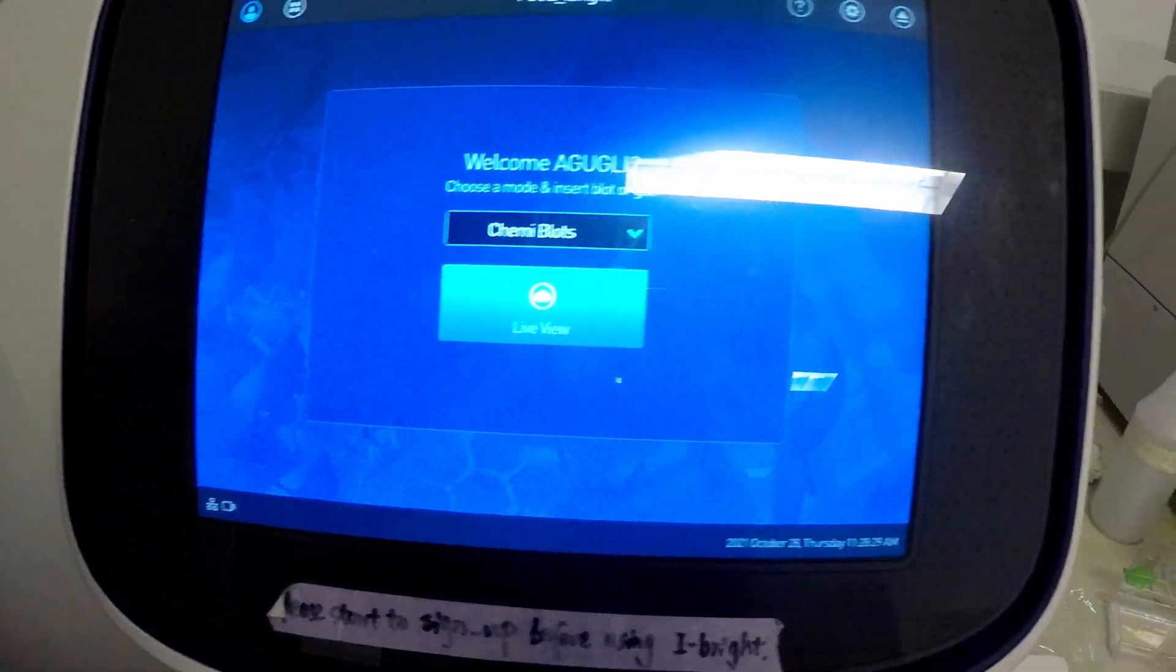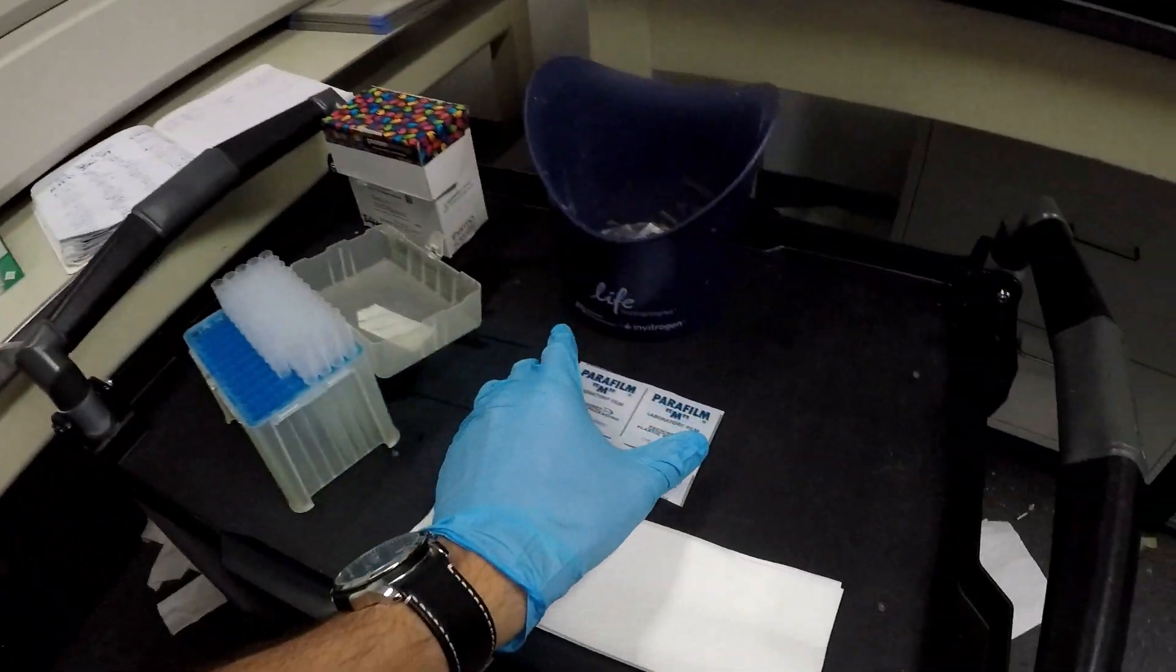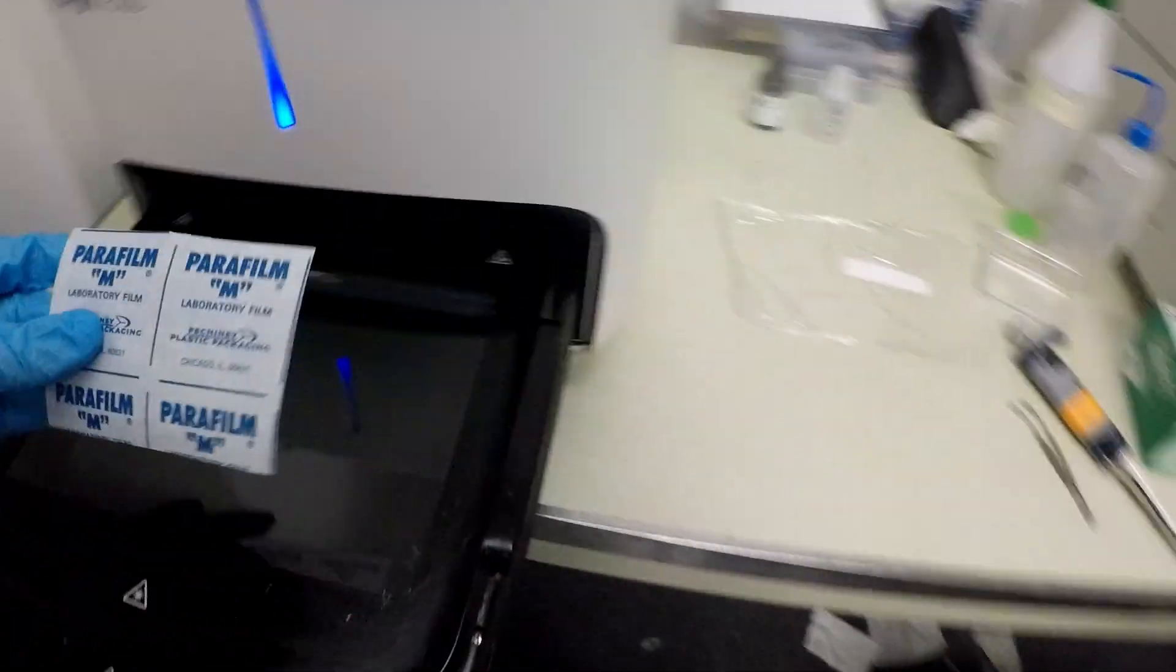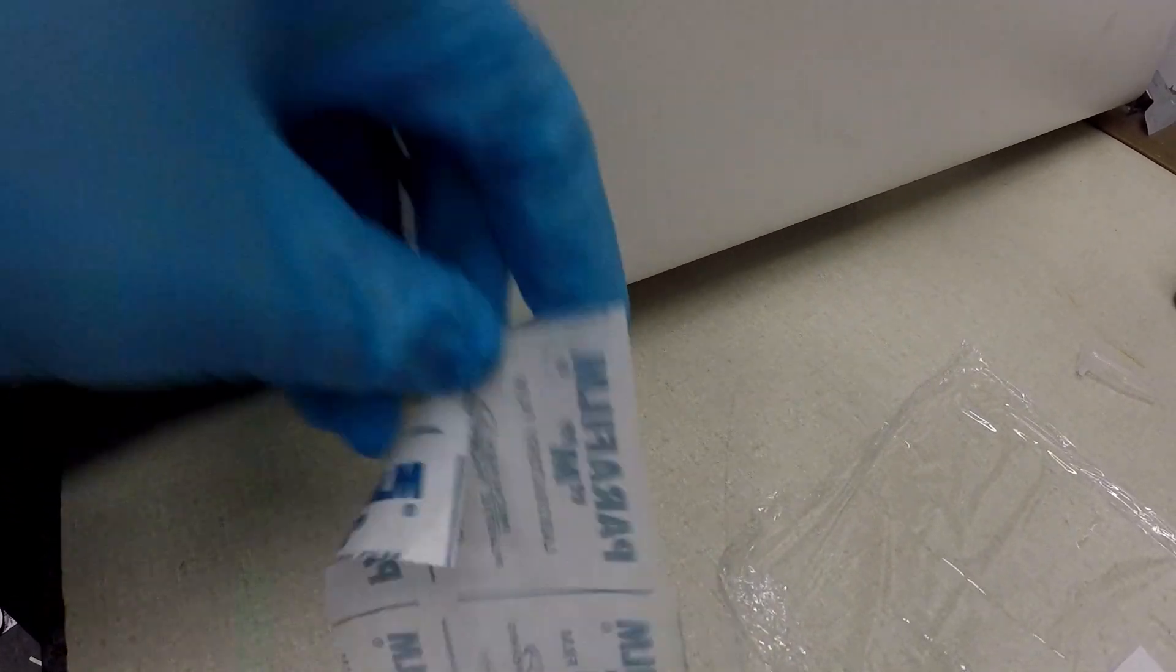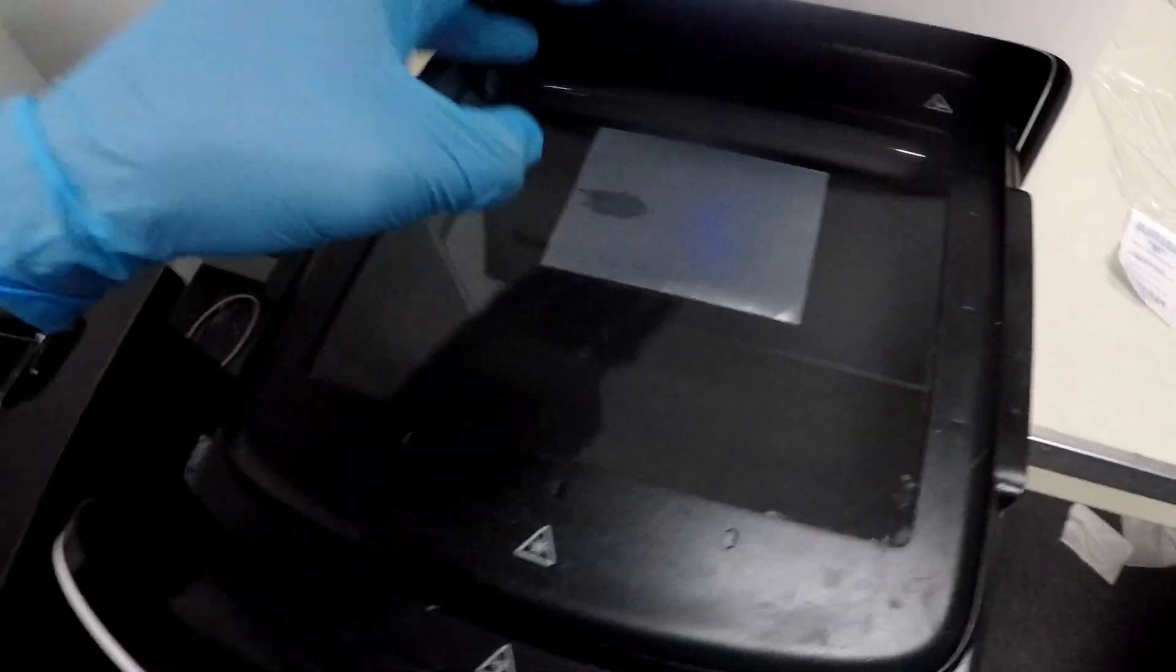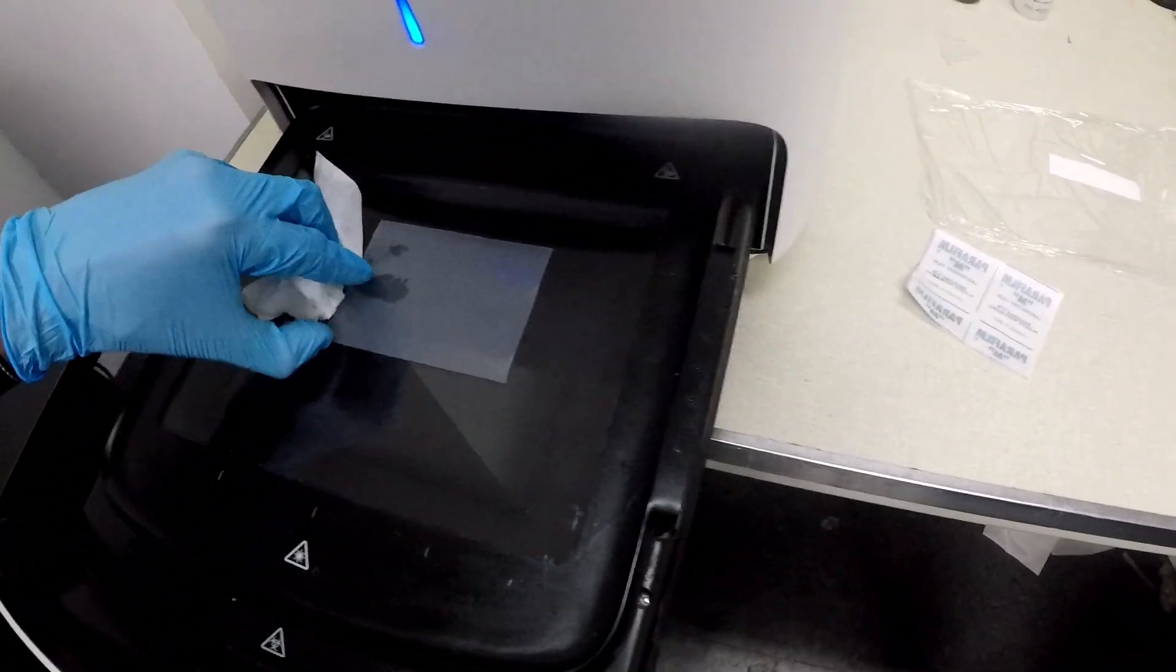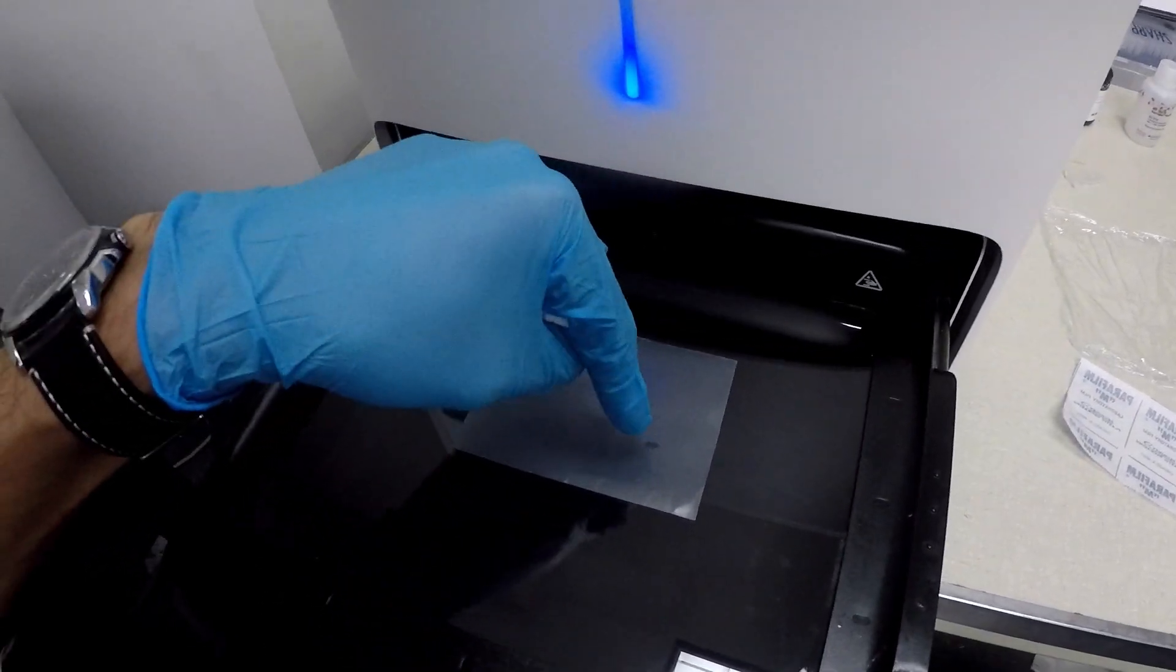So now we have it set to chemi blots. We can just start by opening this up. I can grab this parafilm here. This is going to act as a barrier between the glass and the membrane. So I'm just going to put this directly onto the glass. And then you want to try to not get any of the liquid in between the two pieces. This can be a little bit tedious at times. Now I've got it, but there's a little bit of liquid that should be all right.